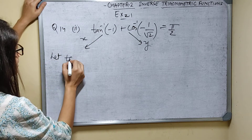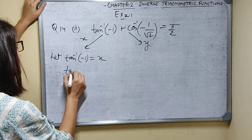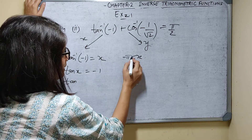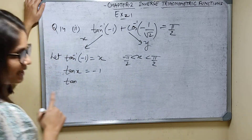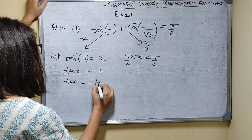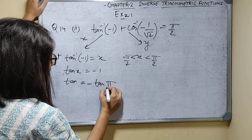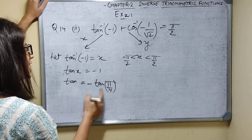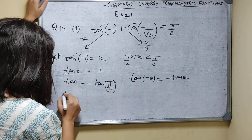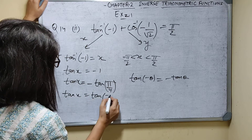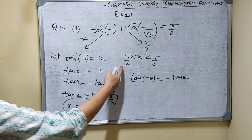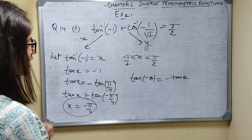Let tan inverse(minus 1) equal x, so tan x equals minus 1. For tan inverse, the range is between minus pi by 2 and pi by 2 (excluding endpoints). Tan x equals negative of tan pi by 4, and since tan(minus theta) equals minus tan theta, tan x equals tan(minus pi by 4). So x equals minus pi by 4, which is minus 45 degrees — satisfying the range condition.